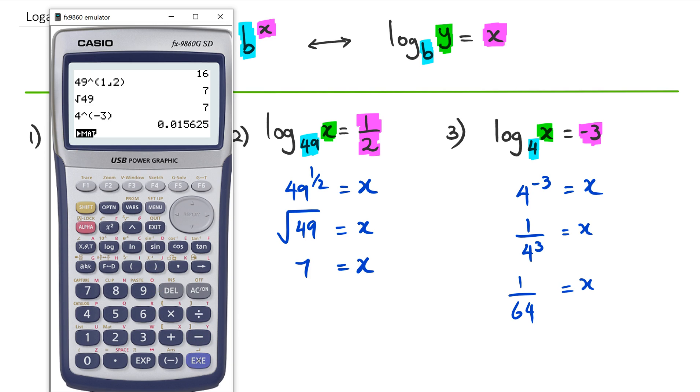You get that horrible looking decimal, but we've got this button called fraction to decimal. You click on that and you can see that the answer you have is 1 over 64.